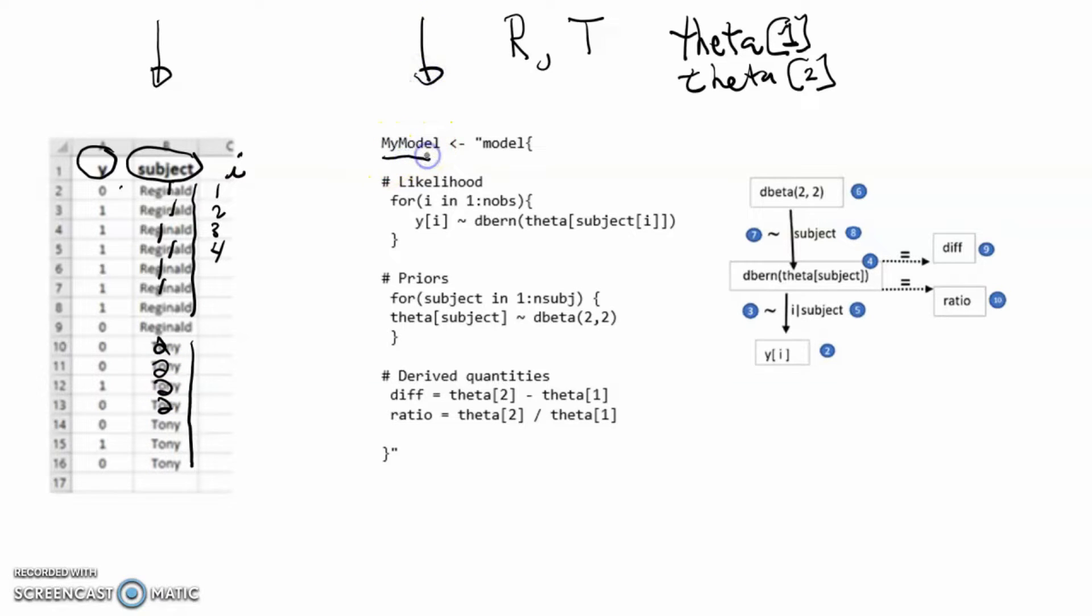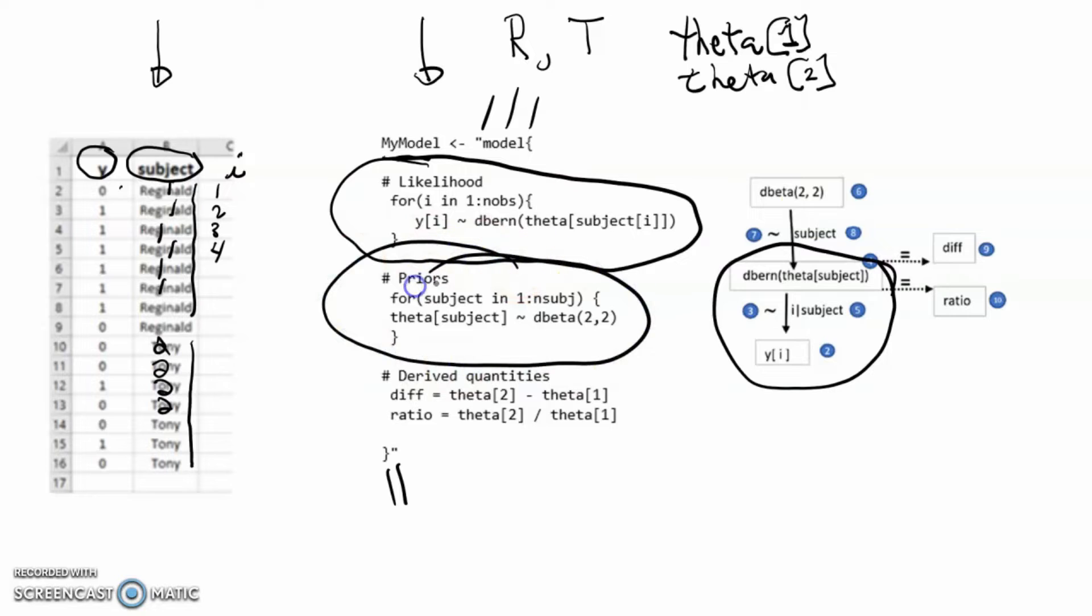Here's our model statement, any valid name will do, open quote, keyword, open parenthesis, close parenthesis, close quote down here. Three components: likelihood, there's the likelihood there; the priors, there's the priors here; and some derived quantities, the derived quantities are shown there.